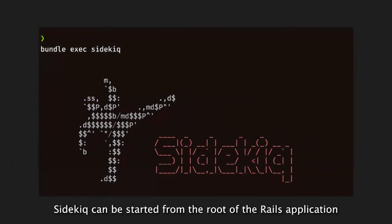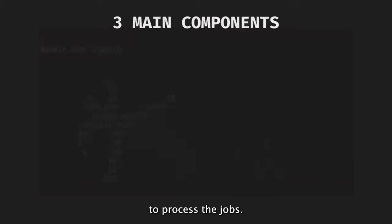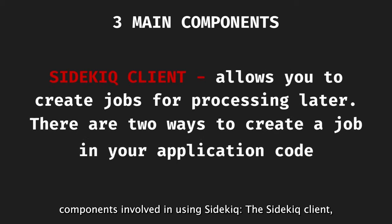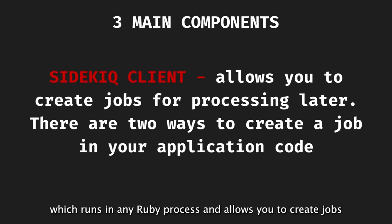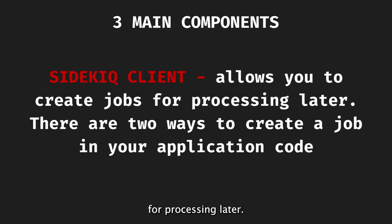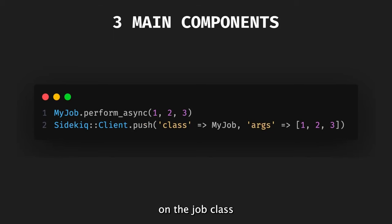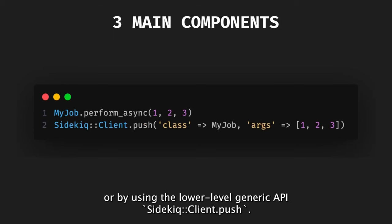Sidekiq can be started from the root of the Rails application to process the jobs. There are three components involved in using Sidekiq. The first is the Sidekiq client, which runs in any Ruby process and allows you to create jobs for processing later. Jobs can be created by calling the perform_async method on the job class or by using the lower-level generic API Sidekiq::Client.push.